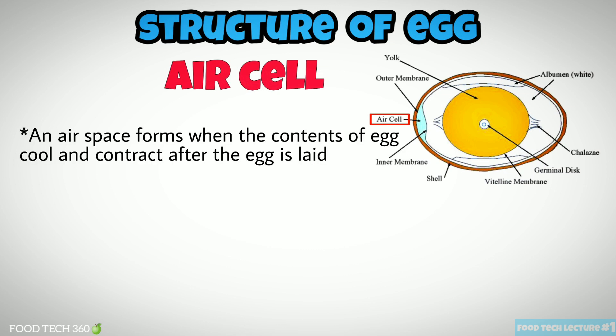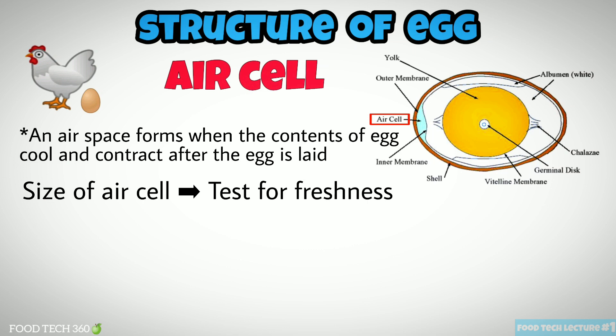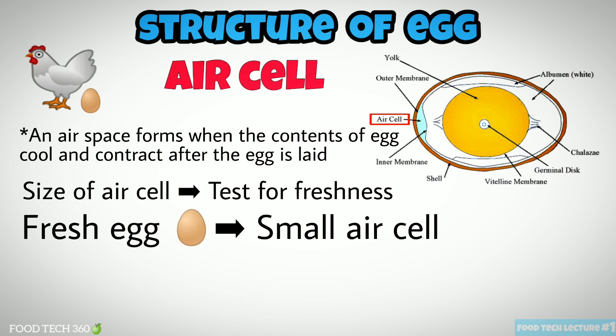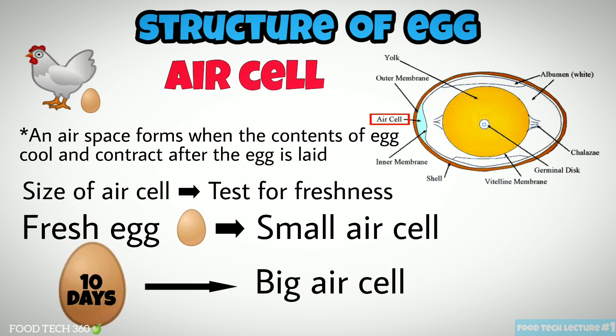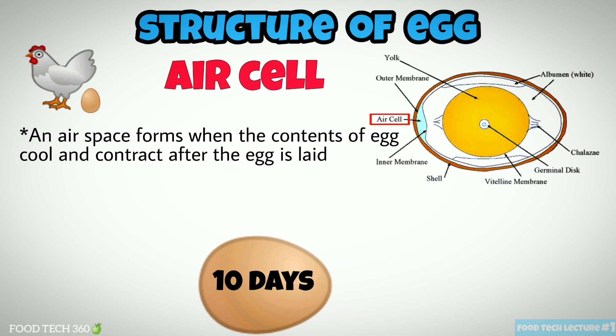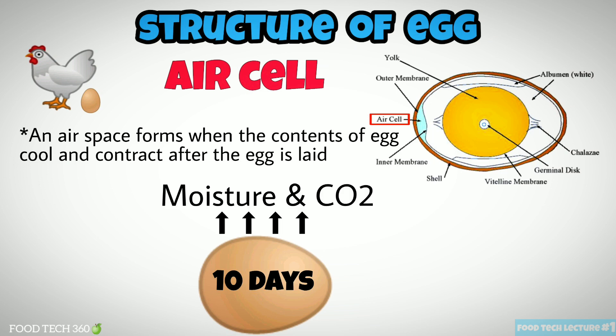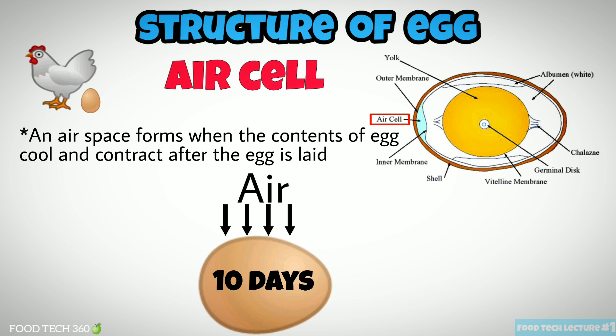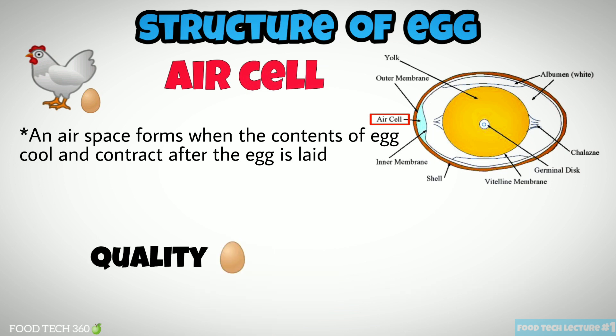The air cell or air space forms when the contents of the egg cool and contract after the egg is laid. The size of the air cell becomes an important testing method for the freshness of an egg. A fresh egg has a small air cell, and as it becomes older the size of the air cell increases. As the egg ages, moisture and carbon dioxide leave through the pores of the shell and air enters to replace them, making the air cell larger.